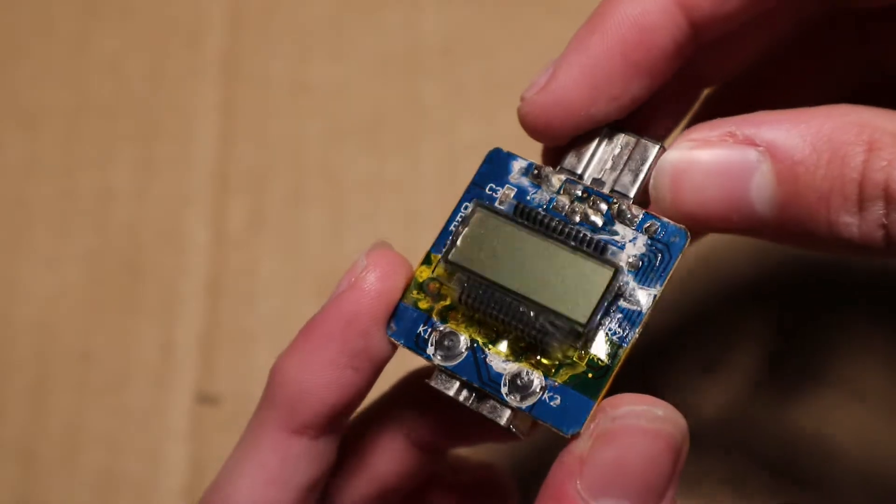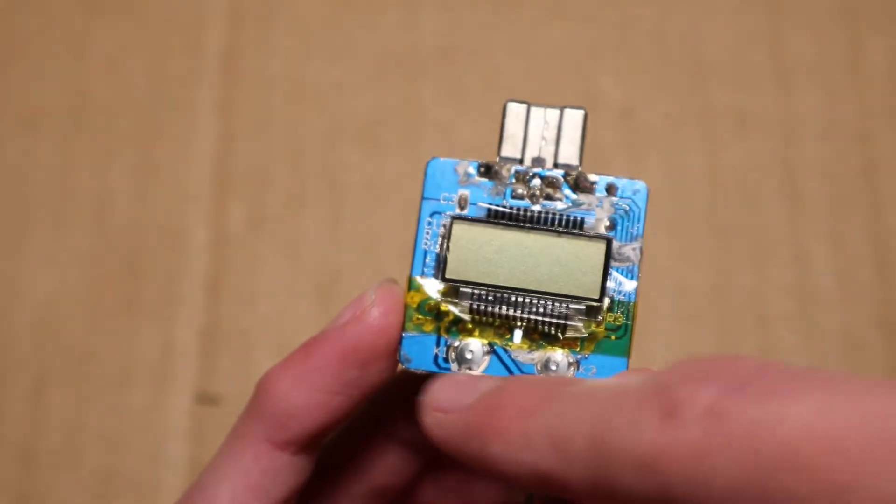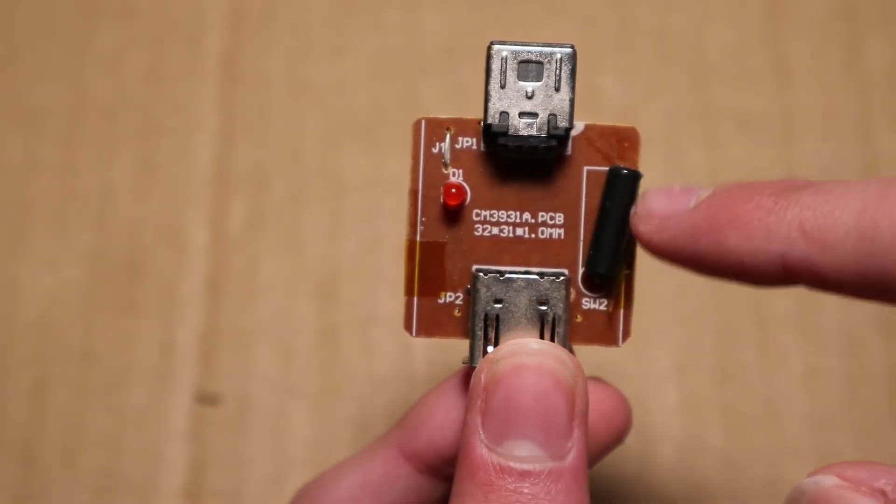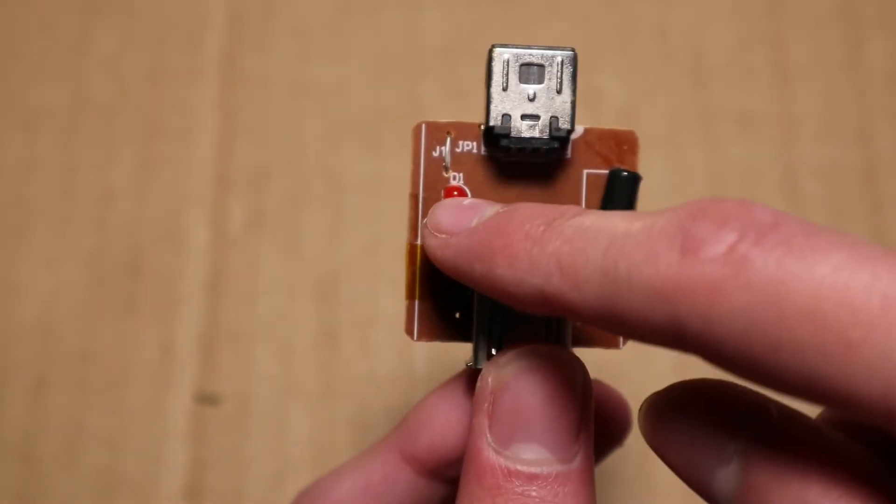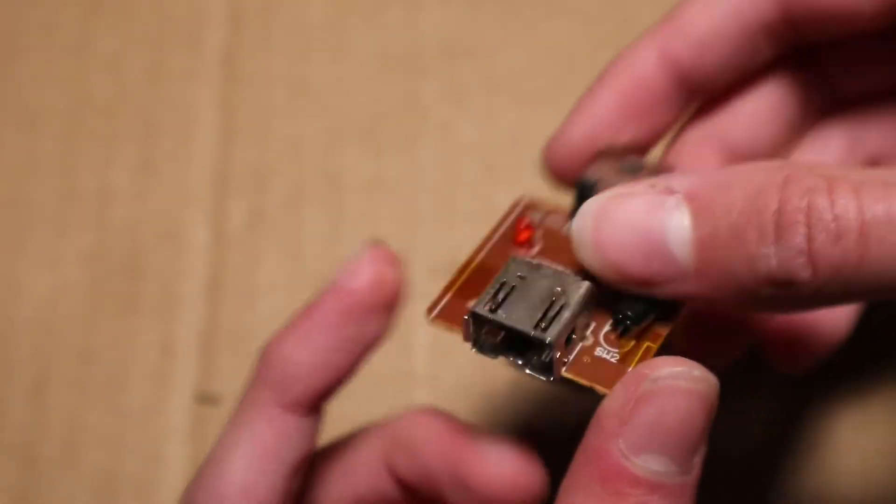So I now removed it from that plastic housing, and there is a display, two buttons, this weird black cylinder thing, which I think is a tilt switch, an LED, and a jumper wire, which is interesting. And there are the connectors.